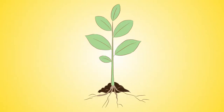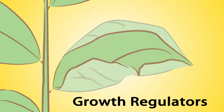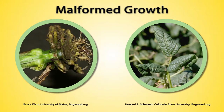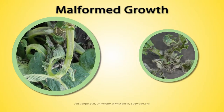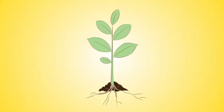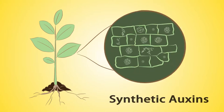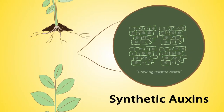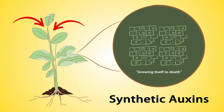Growth regulators are commonly referred to as synthetic auxins. These chemicals mimic natural plant hormones and interrupt plant cell growth in newly forming stems and leaves. They affect protein production and normal cell division, leading to malformed growth. Synthetic auxins also kill plants by causing the cells in the tissue that carry water and nutrients to divide and grow without stopping — this is often called growing itself to death, which is seen by one side of the stem being longer than the other.